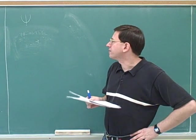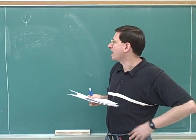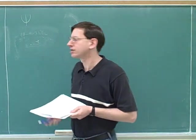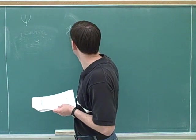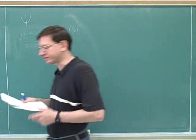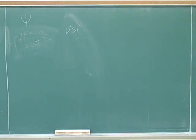The symbol for the wave function that we're going to be using here is psi. So this is the symbol psi for the wave function. So what is the thing that's waving? If this is really a particle, what's the thing that's waving? What does psi represent?